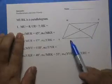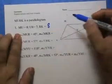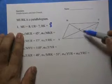RK is opposite from MU, therefore RK is 8. Opposite sides of a parallelogram are congruent, so they have the same length.